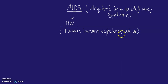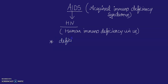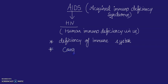Acquired Immunodeficiency Syndrome is basically a deficiency disease of the immune system. It means there is a deficiency of the immune system acquired during the lifetime of an individual, indicating that it is not a congenital disease — meaning it is not present from birth.